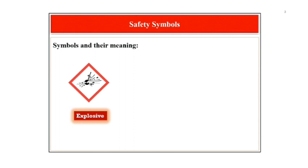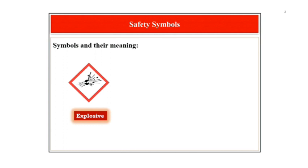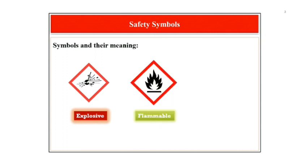This is the symbol for explosive, which includes an exploding bomb. The exploding bomb symbol will appear on chemicals in the lab that have explosive properties. These include unstable explosives, self-reactive substances and organic peroxides.